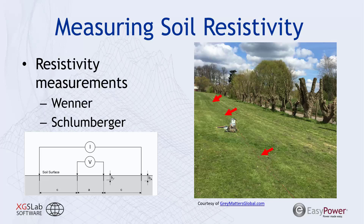Typically, when doing a grounding system analysis, a technician or engineer is sent to the field where the grounding system will be installed. The most common method for measuring soil resistivity is the Wenner method. A test device injects a known current on outer probes inserted into the soil, and voltage is measured on inner probes. As we expand the distance between probes, we evaluate deeper soil layers and understand the electrical characteristics of the soil.